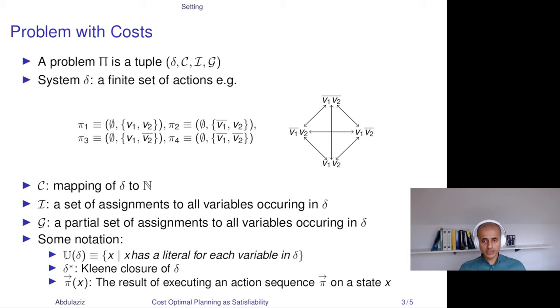Before I get into details, I will first introduce the setup, which is planning problems with costs. Such a problem is a tuple of four elements: delta, C, I, and G. Delta is a set of propositional factored transitions, so a set of actions, each of which is just a pair of sets of literals. This is such a transition system and this is a state space. You have a function C mapping actions to natural numbers, which I call the cost. I is a set of assignments to all variables occurring in delta, so it is a full state, the initial state, and G is a partial state.